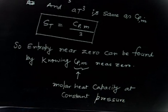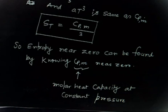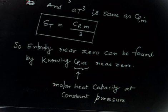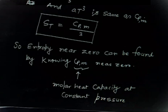This is related to the third law of thermodynamics, which states that as temperature approaches zero kelvin, the entropy of all substances goes to zero. This means all crystals are frozen at one configuration — that is the ideal crystal.